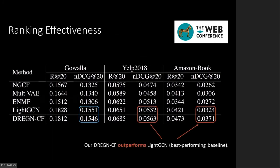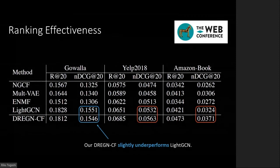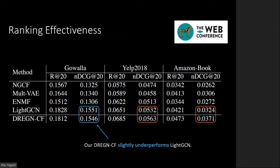We compared our proposed DRE-GNCF with state-of-the-art neural network-based recommenders in terms of ranking effectiveness. The model architecture of DRE-GNCF is the same as LIGHT-GCN; the difference is only in the optimization strategies. LIGHT-GCN uses the pairwise approach while DRE-GNCF uses the DRE approach. We used three real-world datasets: Gowalla, Yelp 2018, and Amazon Book. The best-performing baseline is LIGHT-GCN for all datasets. Our method achieves significantly higher performance on Yelp 2018 and Amazon Book, which have more items than the Gowalla dataset. Our method slightly underperforms LIGHT-GCN on the Gowalla dataset, but the difference is not statistically significant. Overall, our proposed DRE approach achieves comparable or better effectiveness than the pairwise approach.